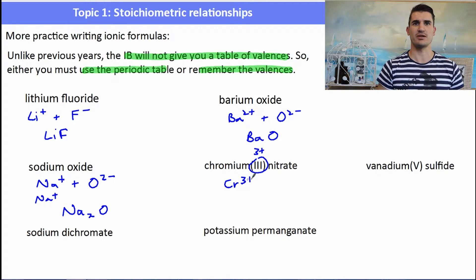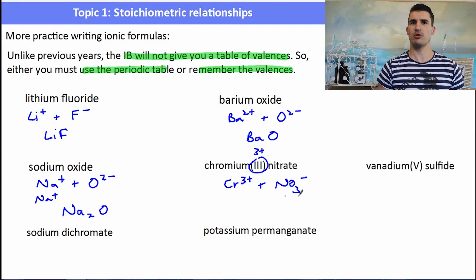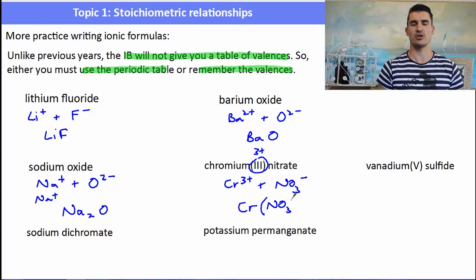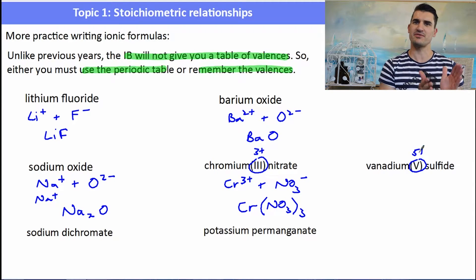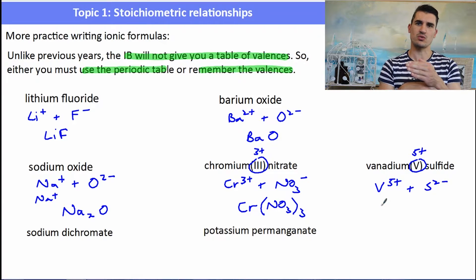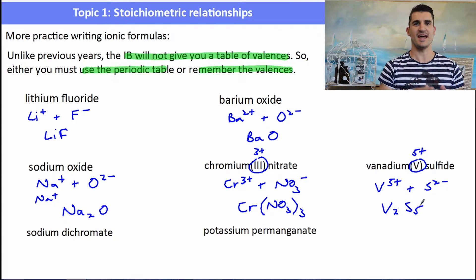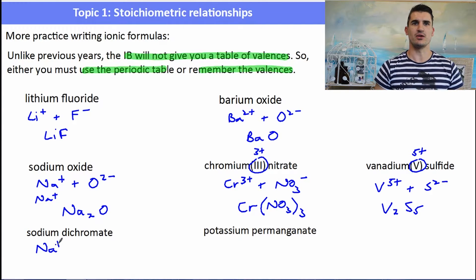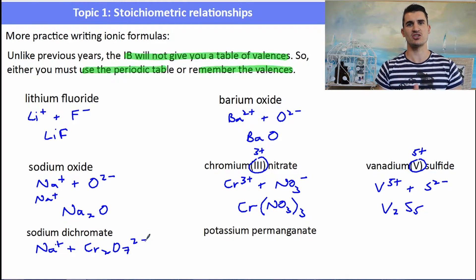Chromium with a little three next to it means it's a chromium three plus ion, and nitrate is a polyatomic ion with the formula NO3 minus. We need three nitrates to balance the chromium's charge, so we include brackets giving Cr(NO3)3. Vanadium five means V five plus, and sulfide is S two minus — swapping the charges gives V2S5. Sodium dichromate: dichromate is Cr2O7 two minus, so we need two sodiums — Na2Cr2O7.